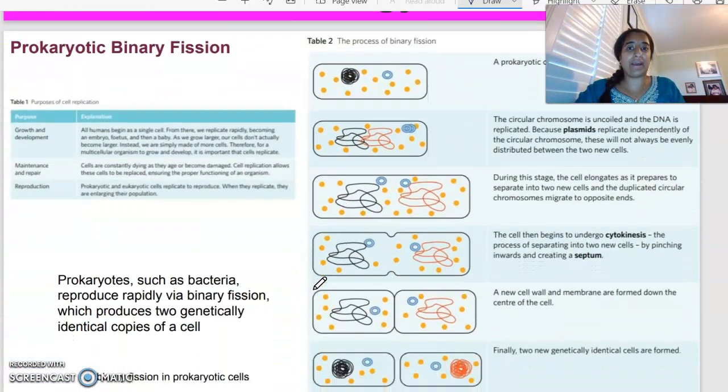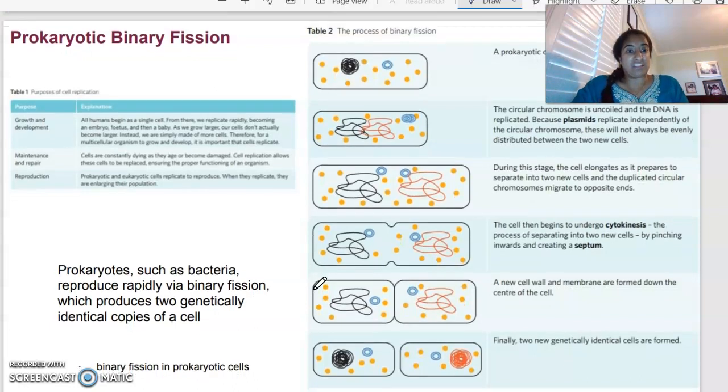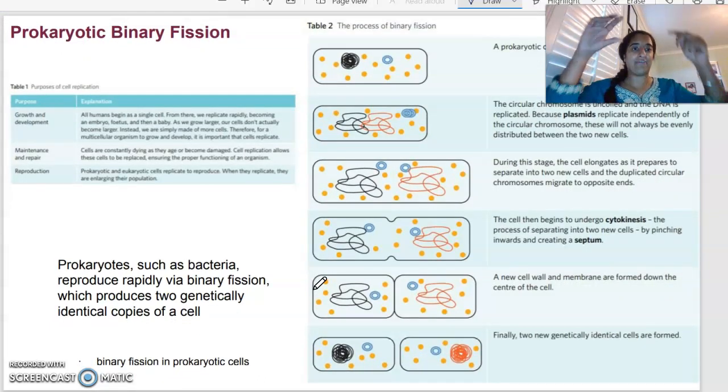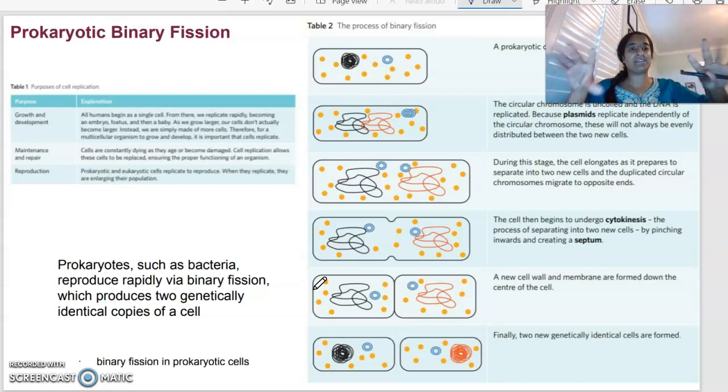Starting off with prokaryotic cell division, which we call binary fission. It's where we have our one cell and it splits into two identical copies. It is a lot more of a simplified process compared to mitosis. And therefore, that's why it's happening in our prokaryotic cells, our simpler cells.